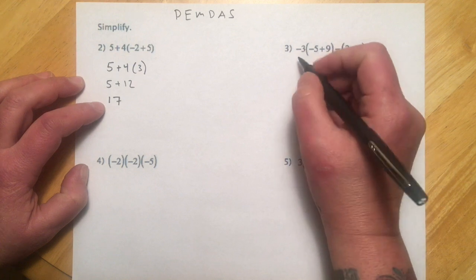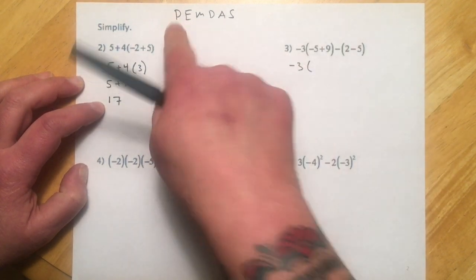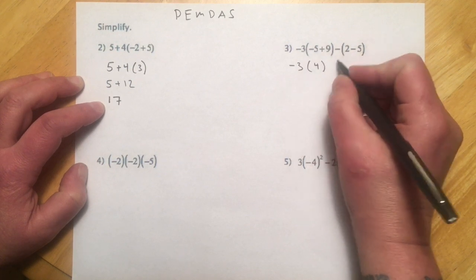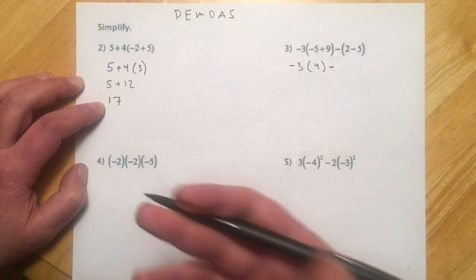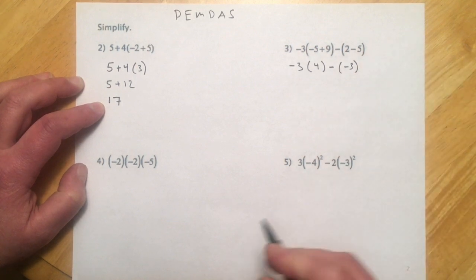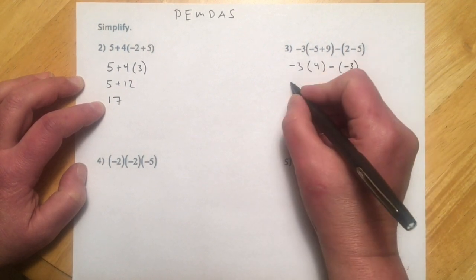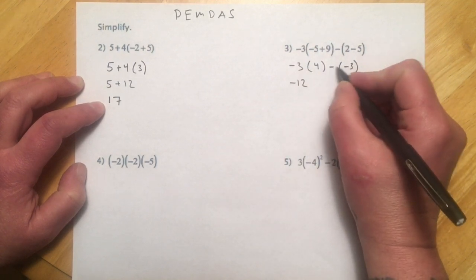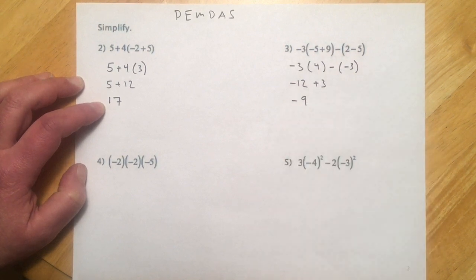This one, we have negative 3, and we'll do inside of parentheses, so negative 5 plus 9 is going to give us a 4 right here. And you can see how much these sign numbers just show up everywhere, so you've got to get comfortable with them. 2 minus 5, that's going to give me a negative 3. So here, the negative 3 and 4 are multiplying, so that's going to give me a negative 12. This is that minus minus, so minus minus makes plus 3, and we end up with 9.